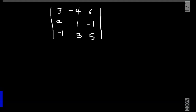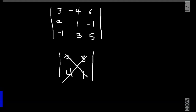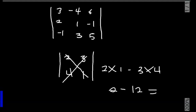Let's take a 2 by 2 matrix for example, with elements 2, 4, 3, and 1. To find the determinant of this matrix, that would be 2 multiplied by 1 minus 4 multiplied by 3. So we have 2 minus 12, which equals minus 10. So the determinant of this 2 by 2 matrix is minus 10.